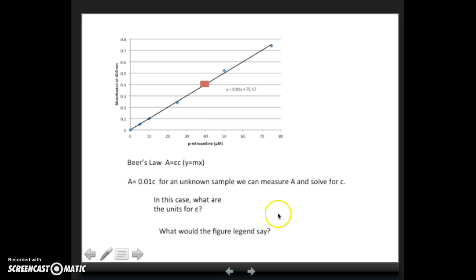The other thing you might want to just think about is what would the figure legend say? We're going to have some practice making figure legends in the next lab, but some things to keep in mind. Remember, it's a standard curve of p-nitroaniline in this case, and if you put the unknown on the graph, then you're actually using the graph to determine what this unknown concentration is. So keep those two things in mind when you're thinking about your figure legends.